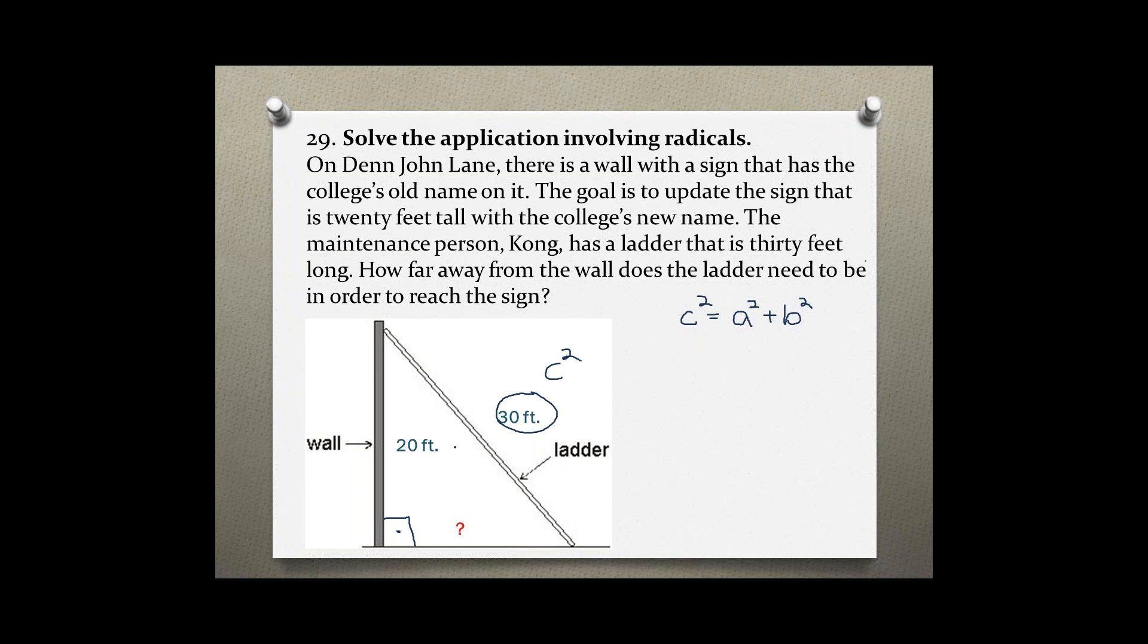And a and b are variable. You can switch them. You would still get the same answer so it doesn't matter for which letter you are going to plug in the 20. So let's start by plugging in 30 for c and then let's just choose our wall to be a so 20 squared and then plus b which is the distance from the wall to the ladder. And we don't know that so we just use b squared.